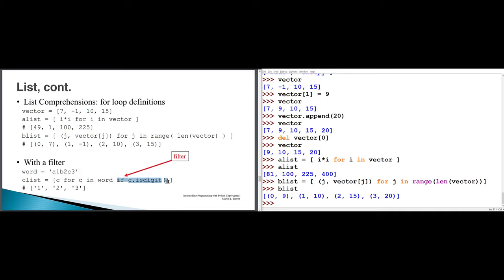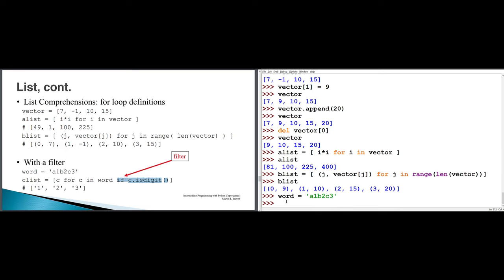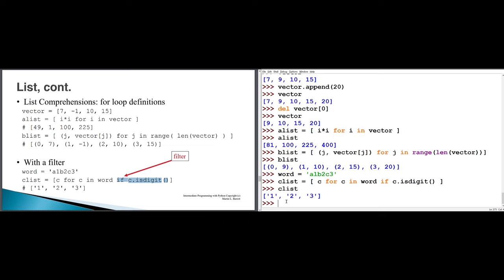It's possible in a comprehension to use a condition so that values are inserted only if some condition is true. For example, clist gets each character c for c in word, but only if c.isdigit(). If word is 'a1b2c3', then A is not added but 1 is, B is not added but 2 is, C is not added but 3 is. So I end up with a list of three single-digit strings.